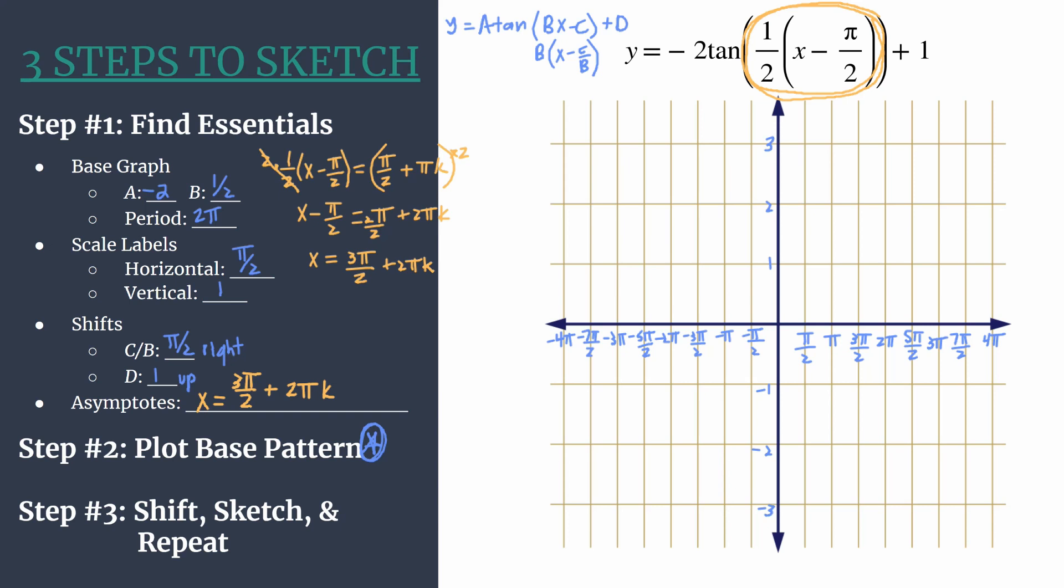So the tangent base pattern is going to be zero or x-intercept, curve shaping point, asymptote, and another curve shaping point. So we know that that starts at the origin. I'm going to do this in a light blue. So we'll start at the origin. We know that our next point, our curve shaping point, will happen at our first horizontally labeled tick mark pi over 2. And the y coordinate is simply going to be the value of a, so negative 2. And you can already see part of that tangent curve forming. And you notice that this will be reflected from y equals tan x.